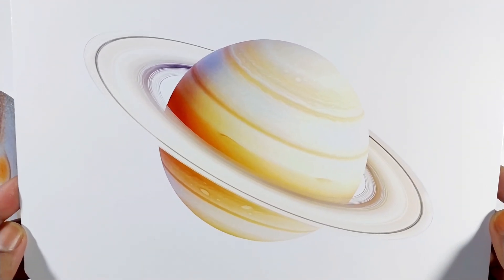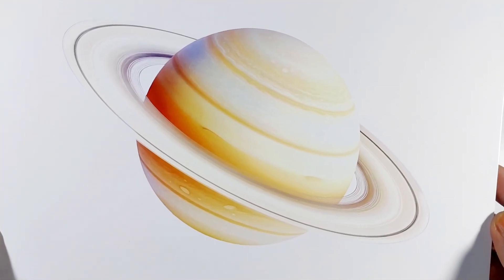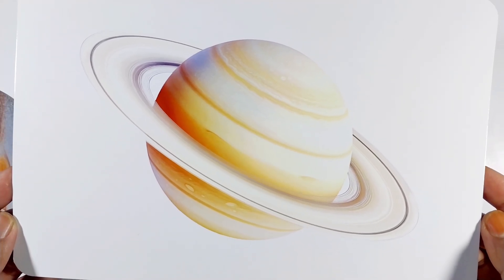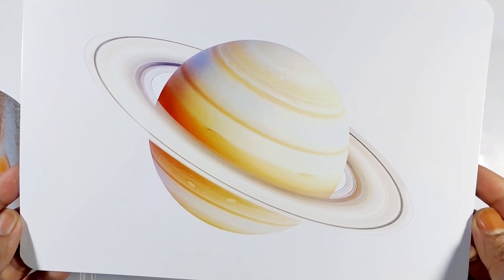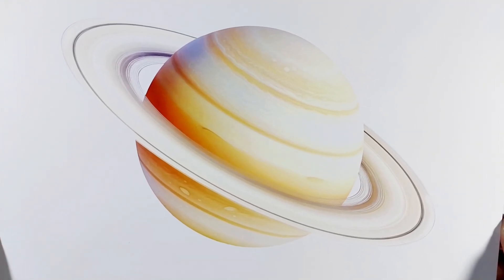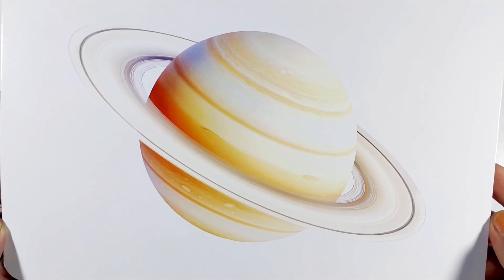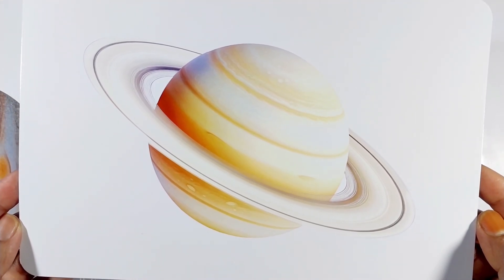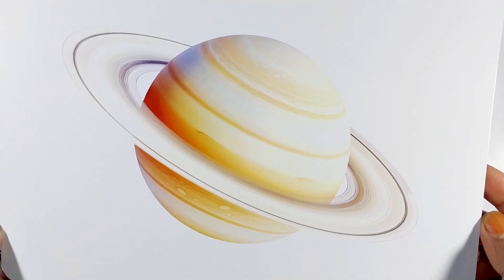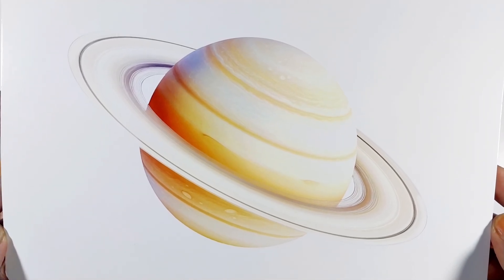Saturn is famous for its stunning ring system, which is made up of billions of icy particles. It is the second largest planet in our solar system and has a distinct yellowish color due to the presence of ammonia crystals in its atmosphere. Saturn has over 80 moons, with its largest moon Titan being larger than the planet Mercury.